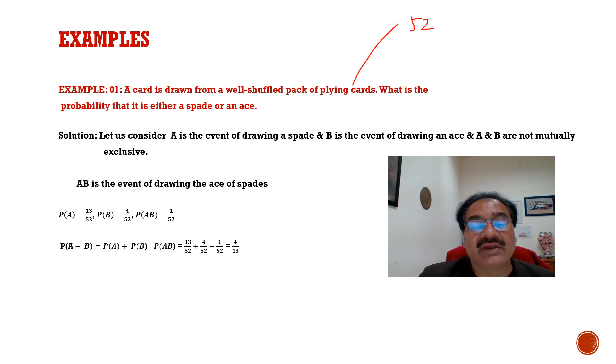Let A be the event of drawing a spade and B the event of drawing an ace. A and B are not mutually exclusive, when A and B is the event of drawing the ace of spades. Total cards are 52, one color spade is 13, so 13 by 52. P of B similarly, there are four aces, so 4 by 52. Then P of A and B is 1 by 52.